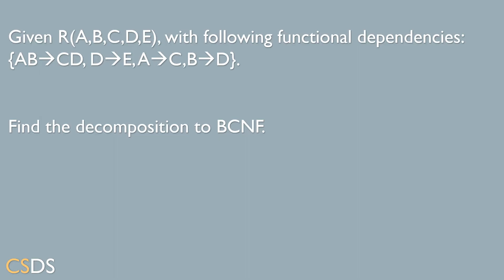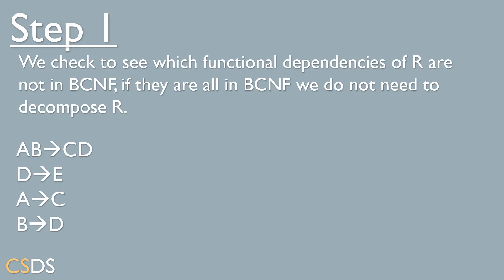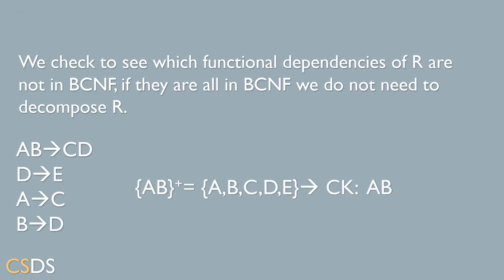Given the relation R with the following functional dependencies, we'd like to find the decomposition of the relation to BCNF. The first step of the BCNF decomposition is to check and see if all the functional dependencies are in BCNF form. If all the functional dependencies are in BCNF form, we do not need to decompose our relation because it is already in BCNF. We need to find the candidate key of the relation R.